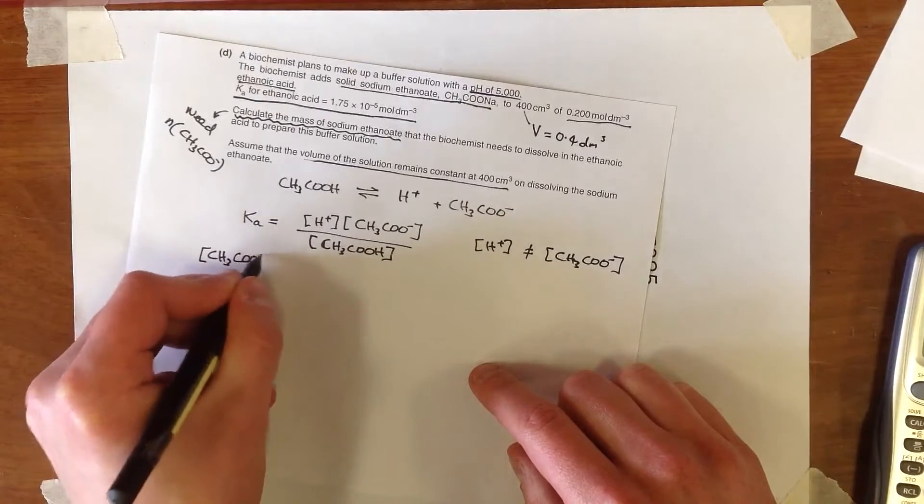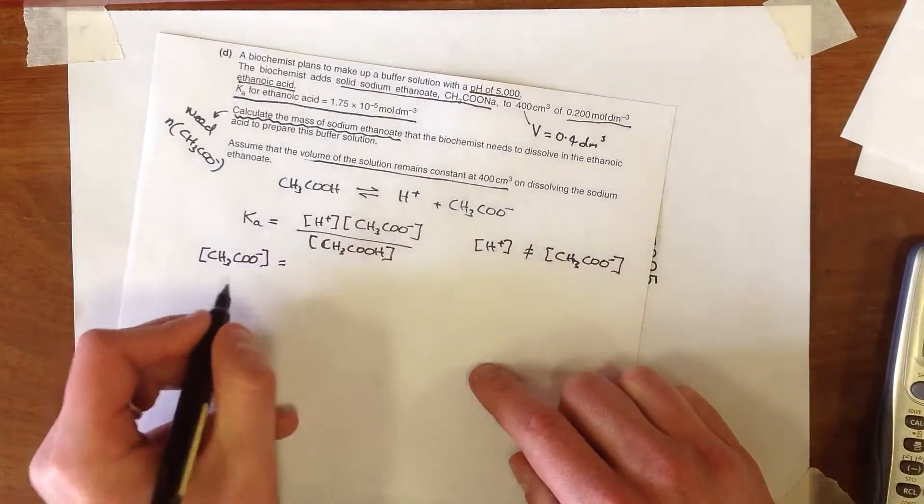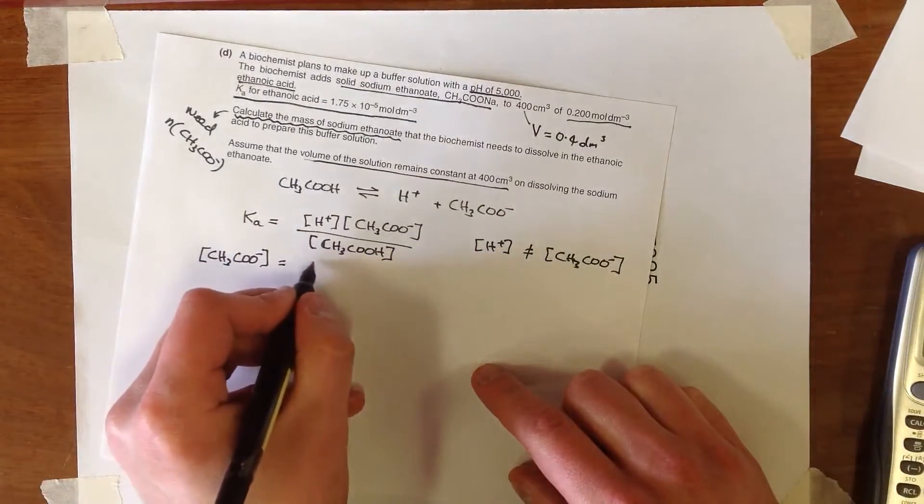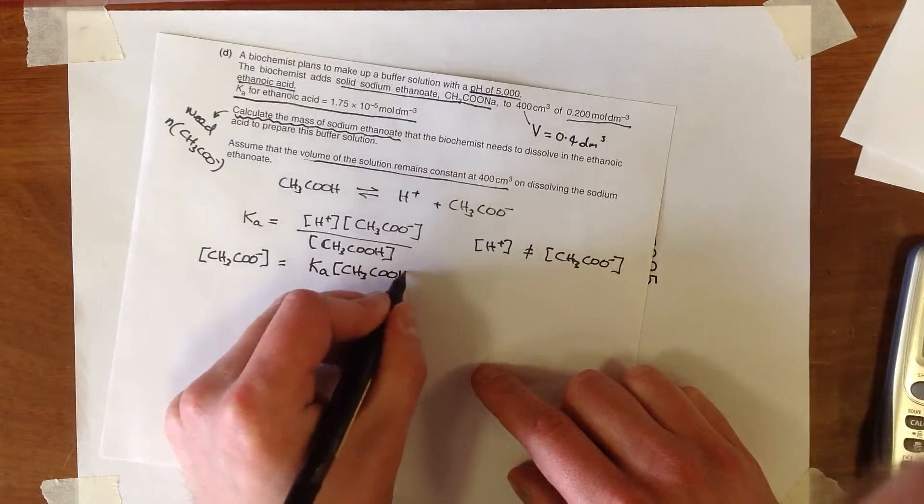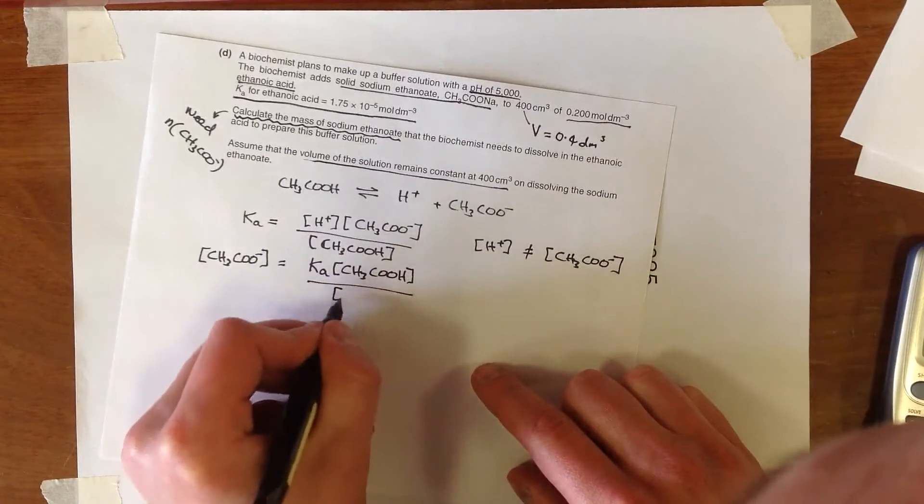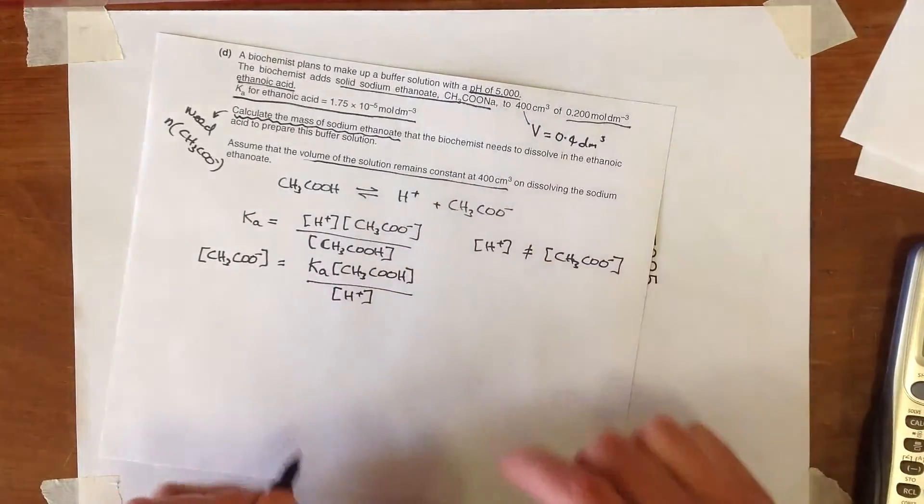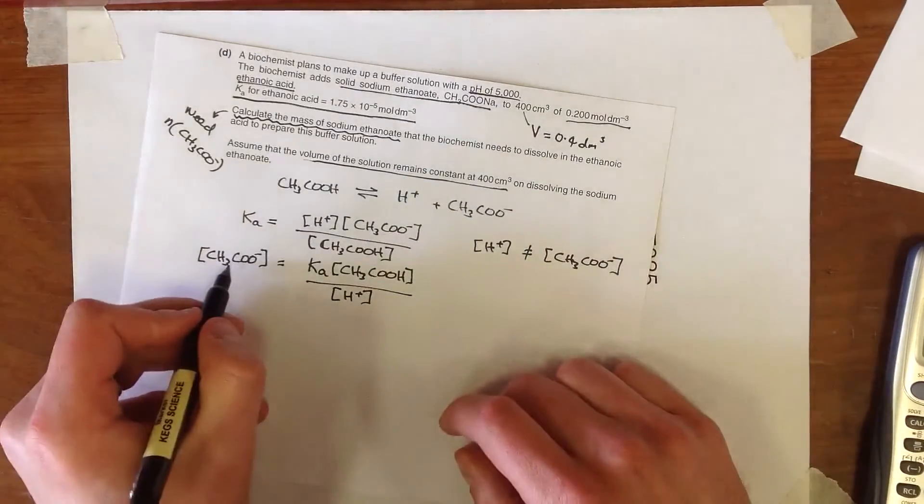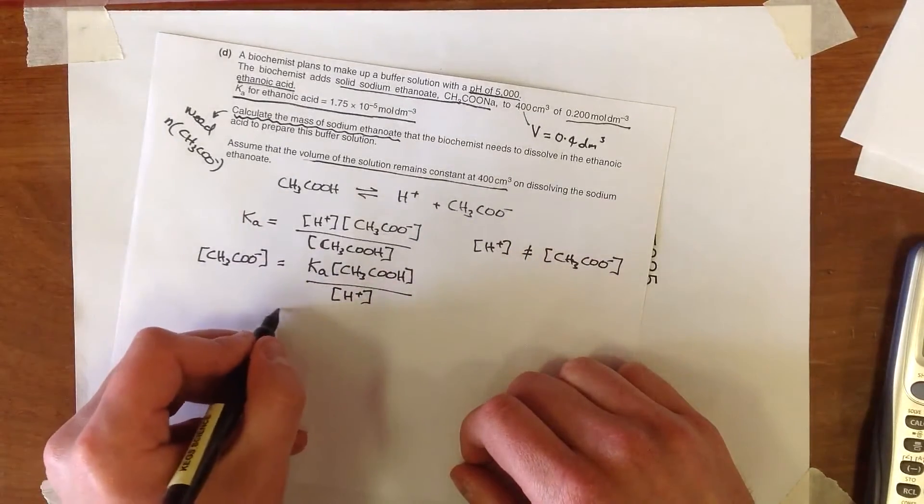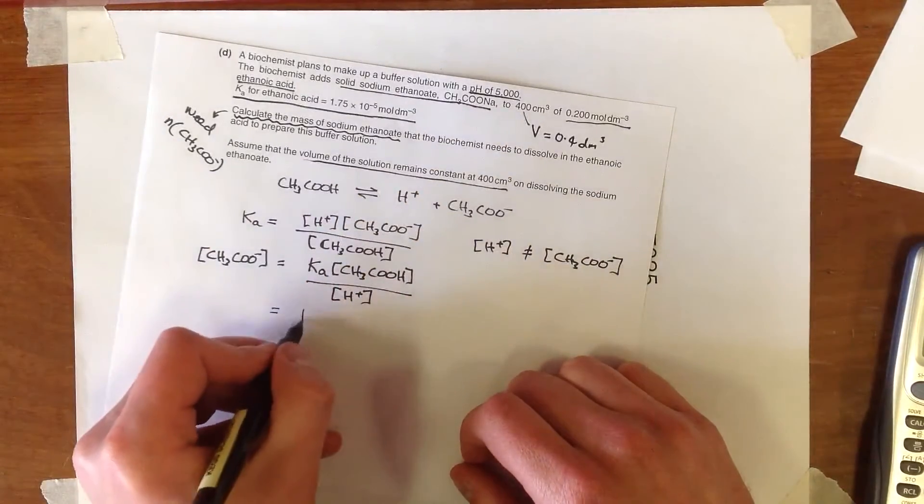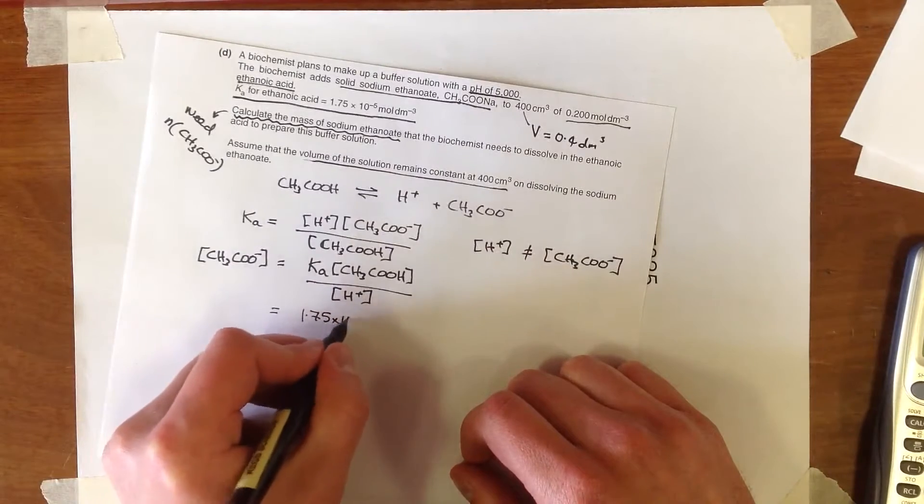So it would make [CH3COO-] concentration the subject of this: [CH3COO-] = Ka × [CH3COOH] / [H+]. We've made that the subject of the formula. Now we need, then, if we're going to work out its concentration, to know three things. Now we know that Ka, because we've been told that in the question, 1.75 times 10 to the minus 5.